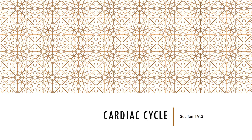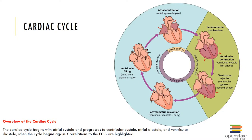Each heartbeat is followed by a brief resting phase, allowing time for the chambers to relax and prepare for the next heartbeat, and for oxygenated blood to be distributed to the walls of the heart. The period between the start of one heartbeat and the beginning of the next is a single cardiac cycle, which includes alternating periods of contraction and relaxation. The heart is really four pumps working in pairs. The two atria contract first, pushing blood into the ventricles, then the two ventricles contract, pushing blood through the pulmonary and systemic circuits.